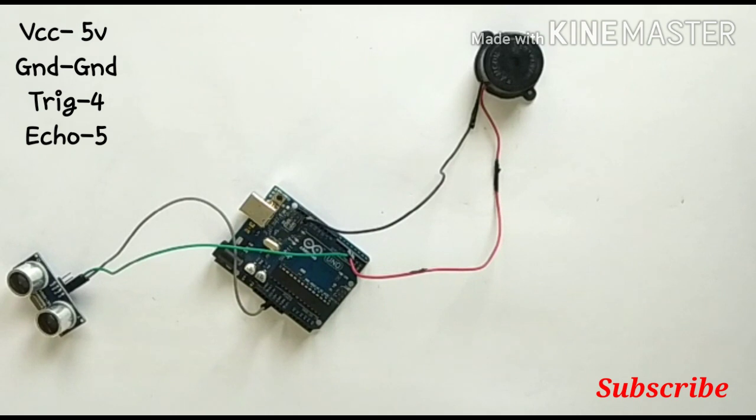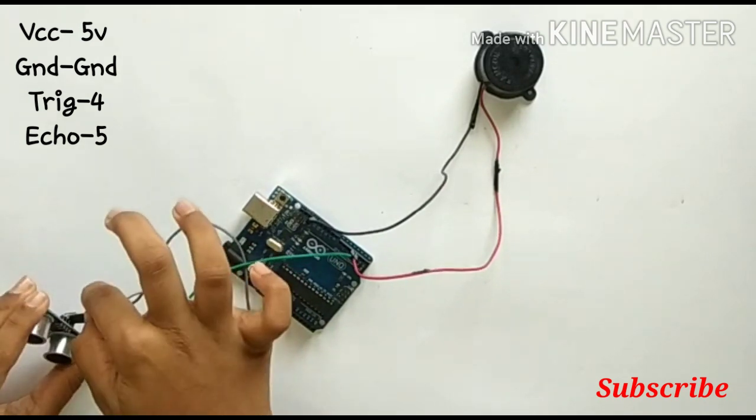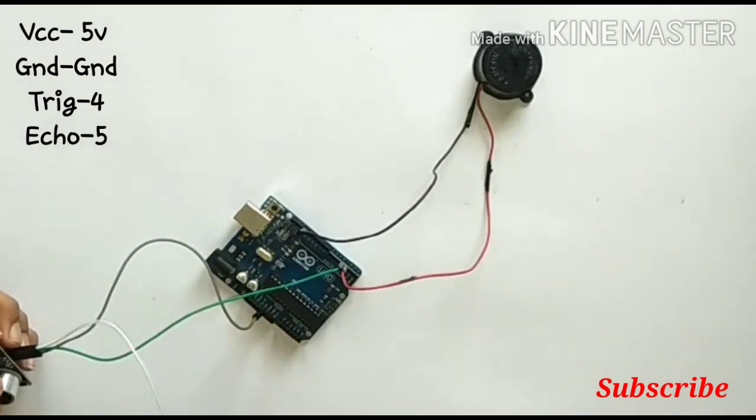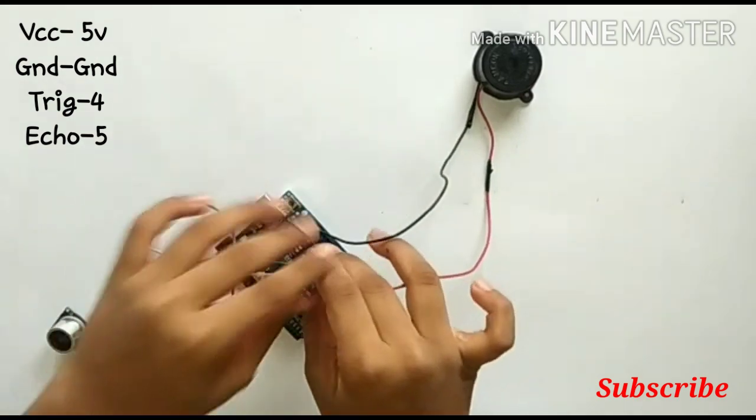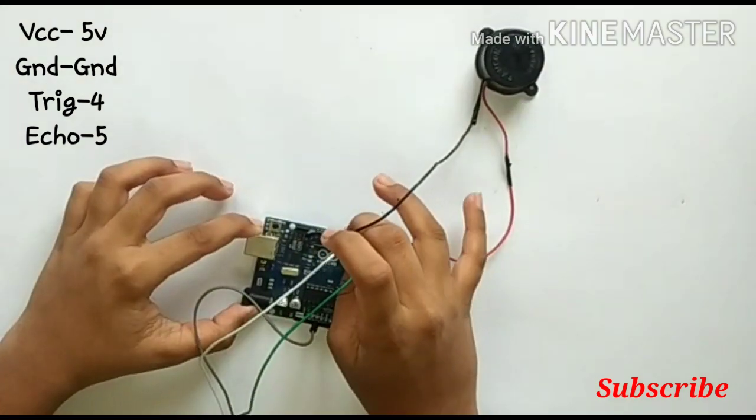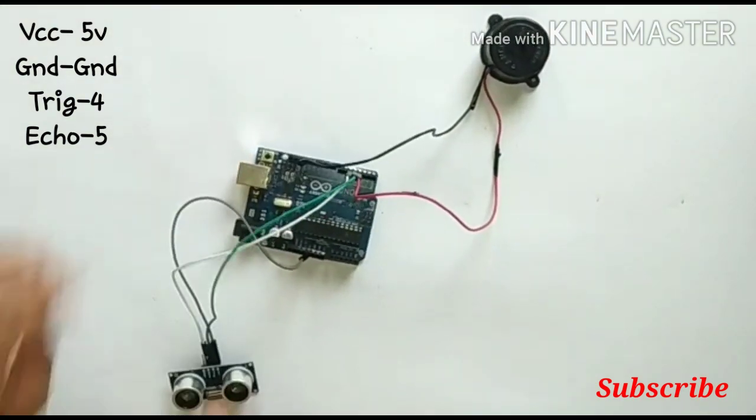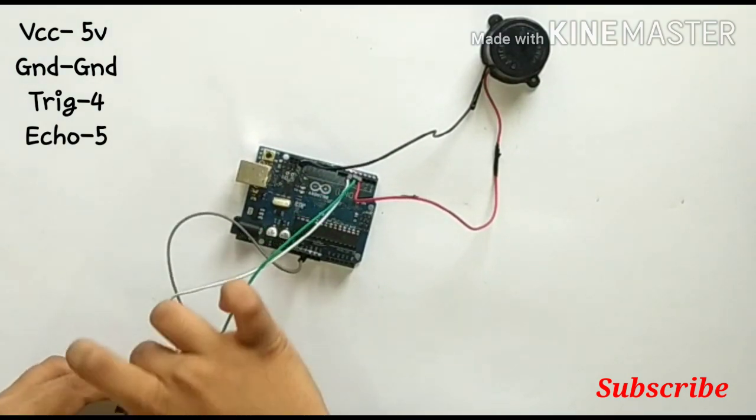Now connect the GND of the ultrasonic sensor to digital pin number 5. Now connect the GND of the ultrasonic sensor to the GND of the Arduino board.